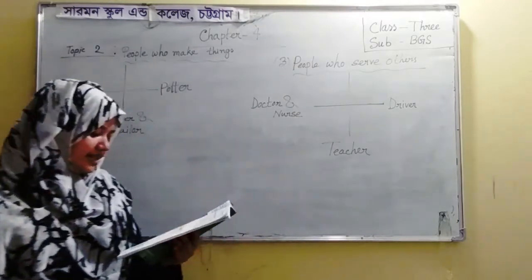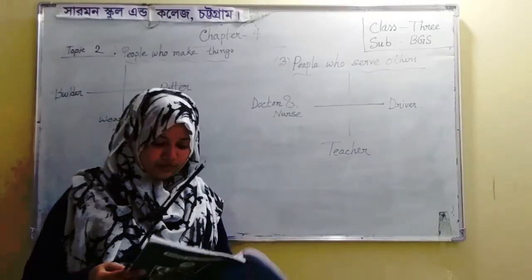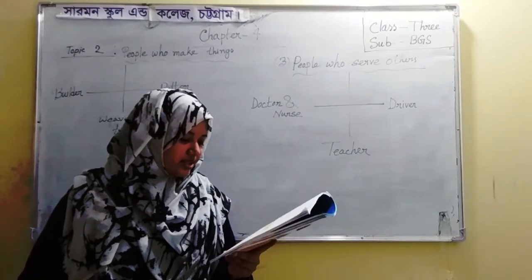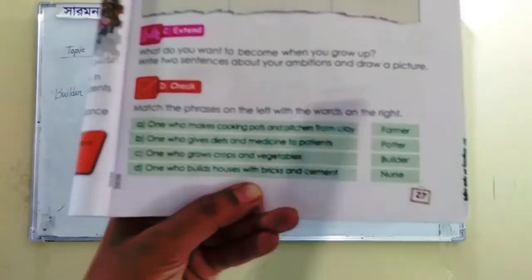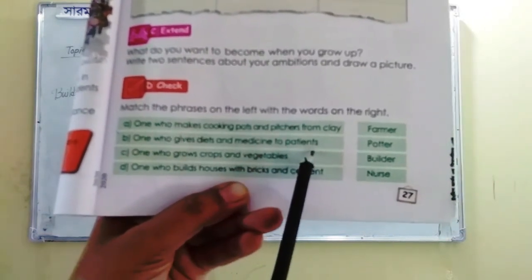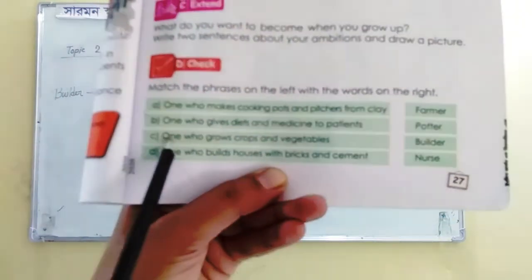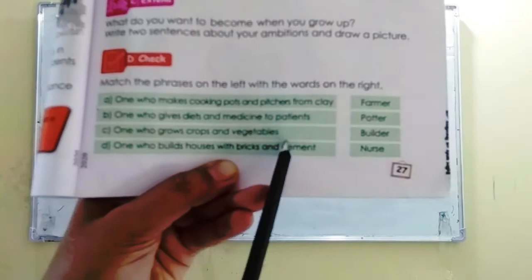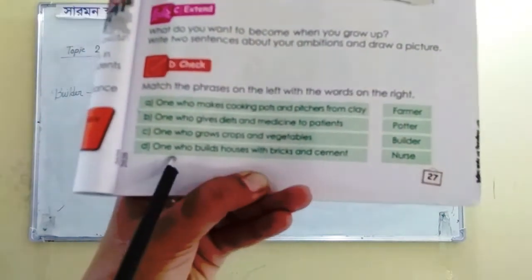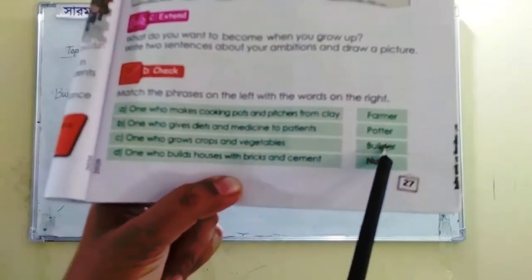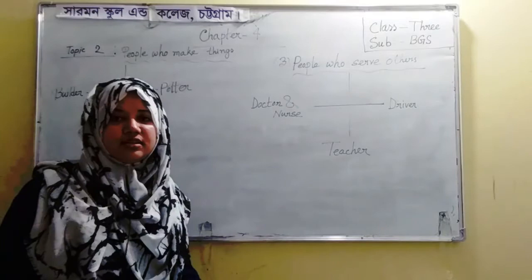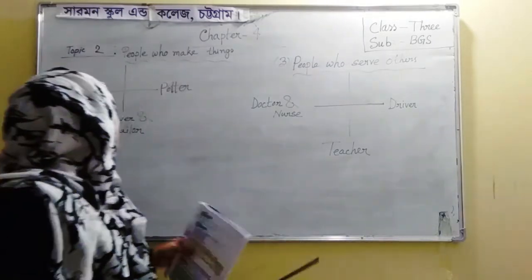Now turn to page 27, section D — there is a matching exercise. One who makes cooking pots and pitchers from clay is the potter. One who gives diet and medicine to patients is the nurse. One who grows crops and vegetables is the farmer. One who builds houses with bricks and cement is the builder.